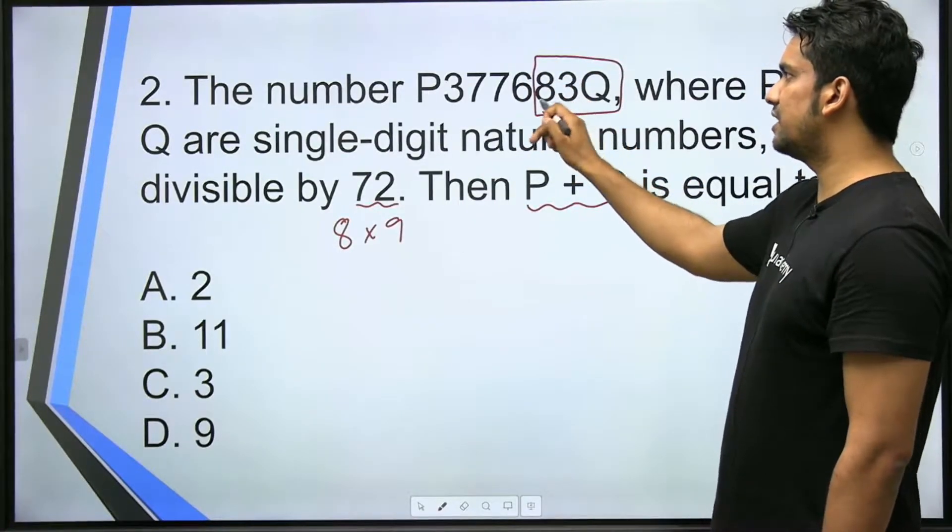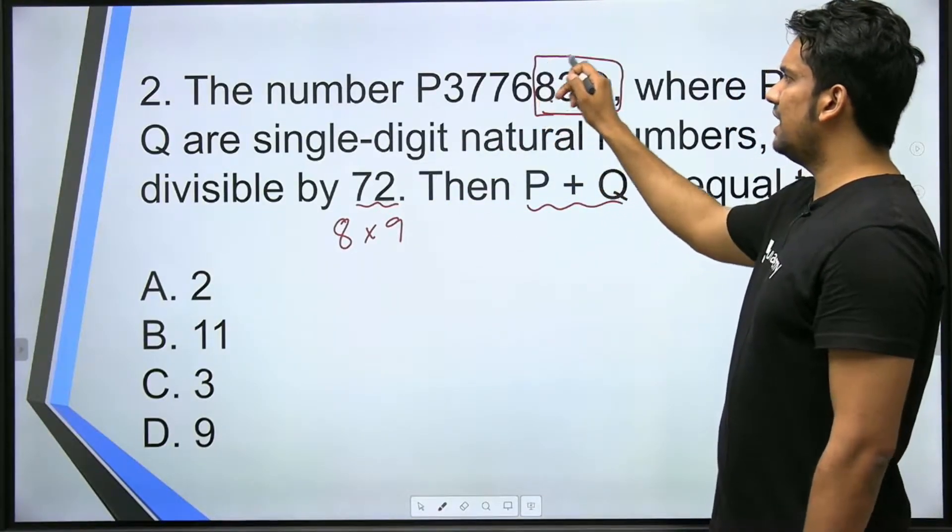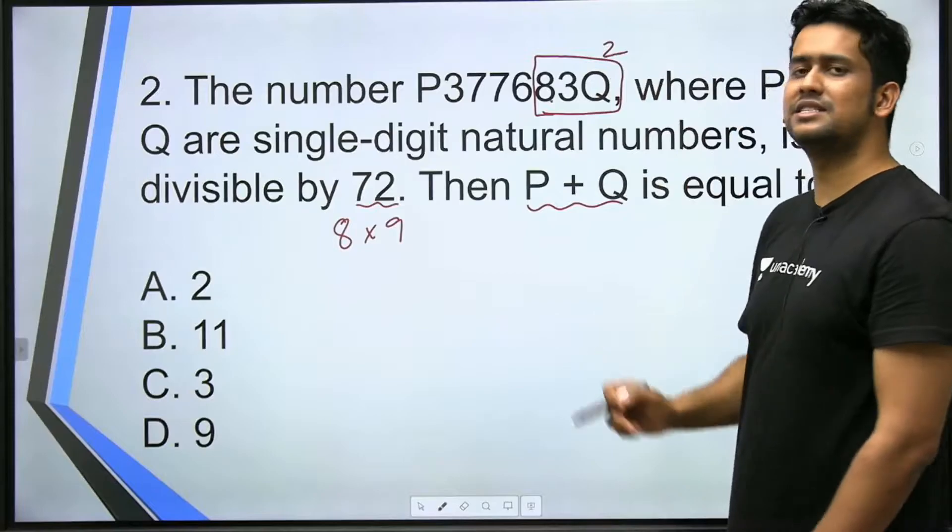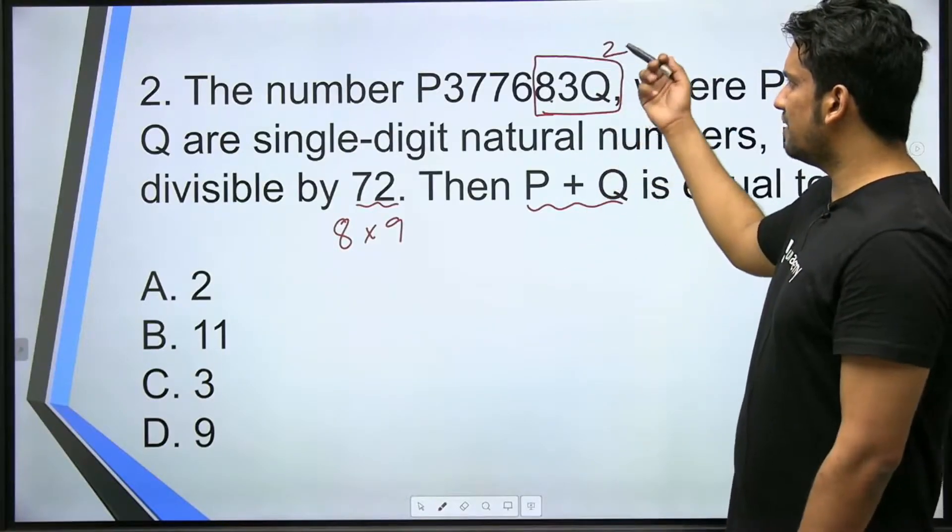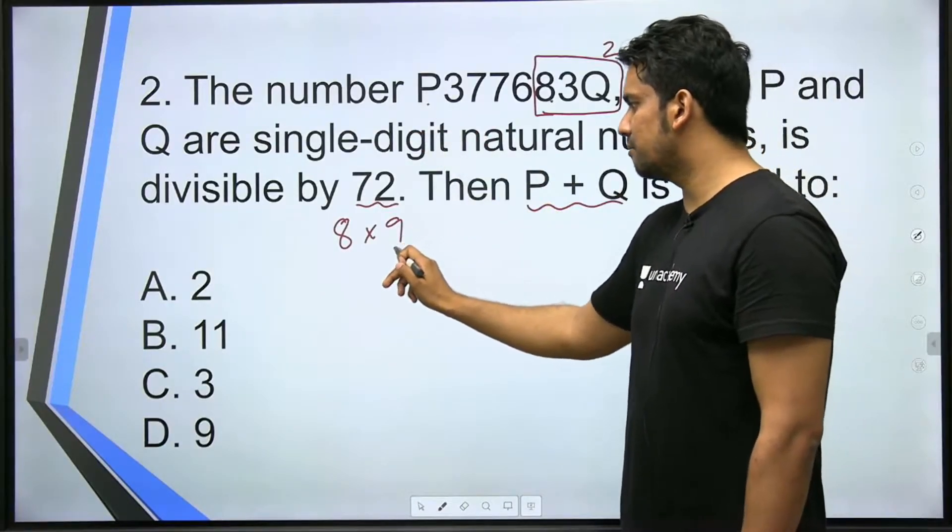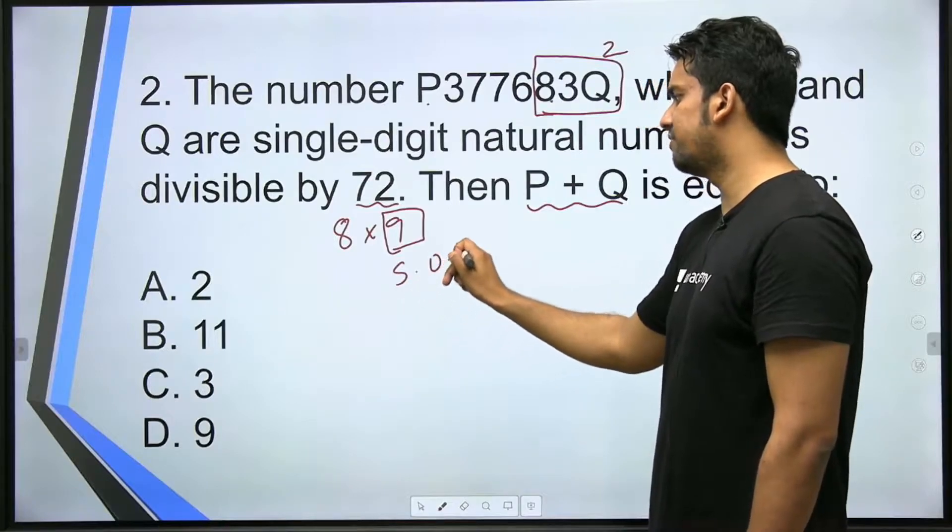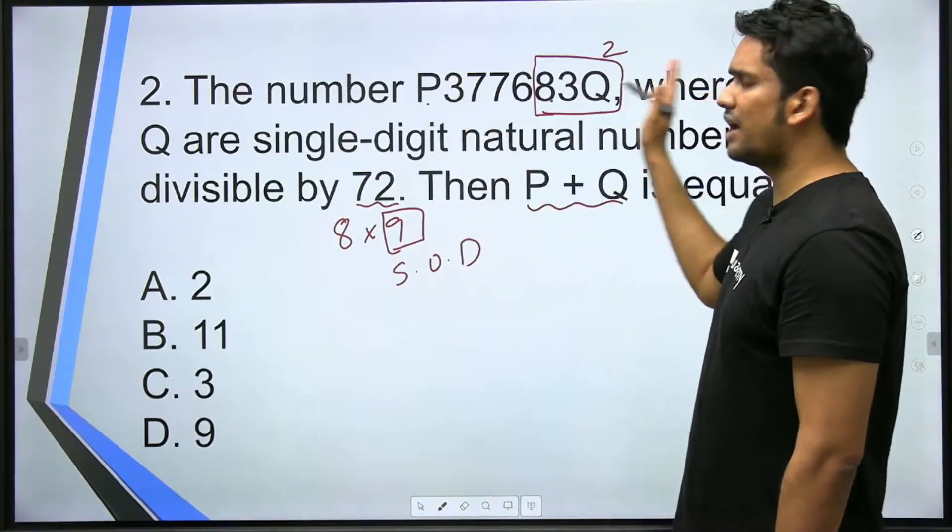So 8's divisibility rule is last three digits. This is even simpler because you're given these two digits. So if I divide by 8, then 832 is divisible by 8. So Q's value is defined as 2. Now we just have to find P's value. For that, this number is divisible by 9. 9's divisibility rule is sum of digits.